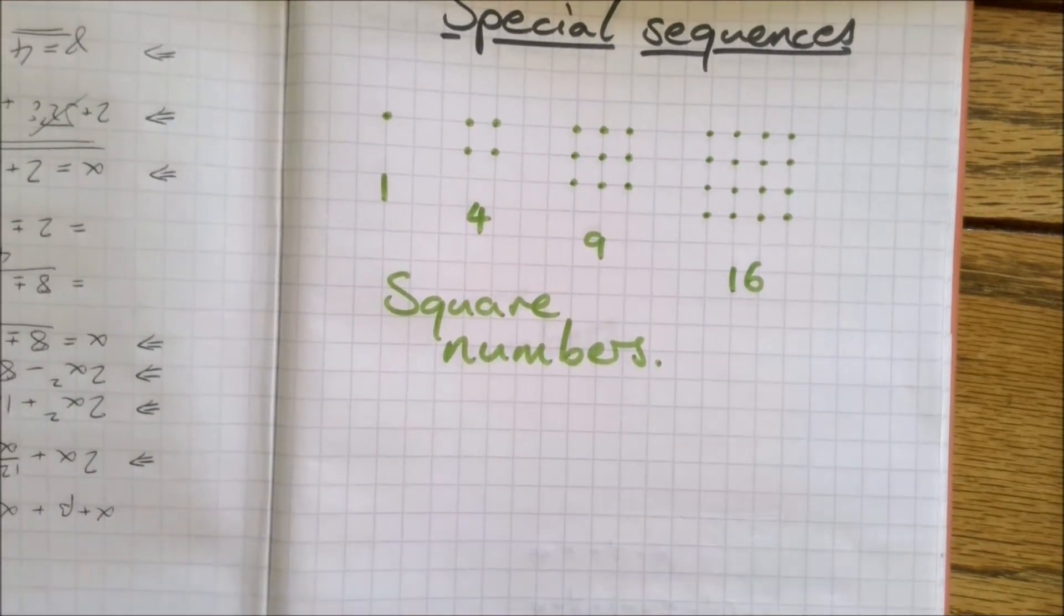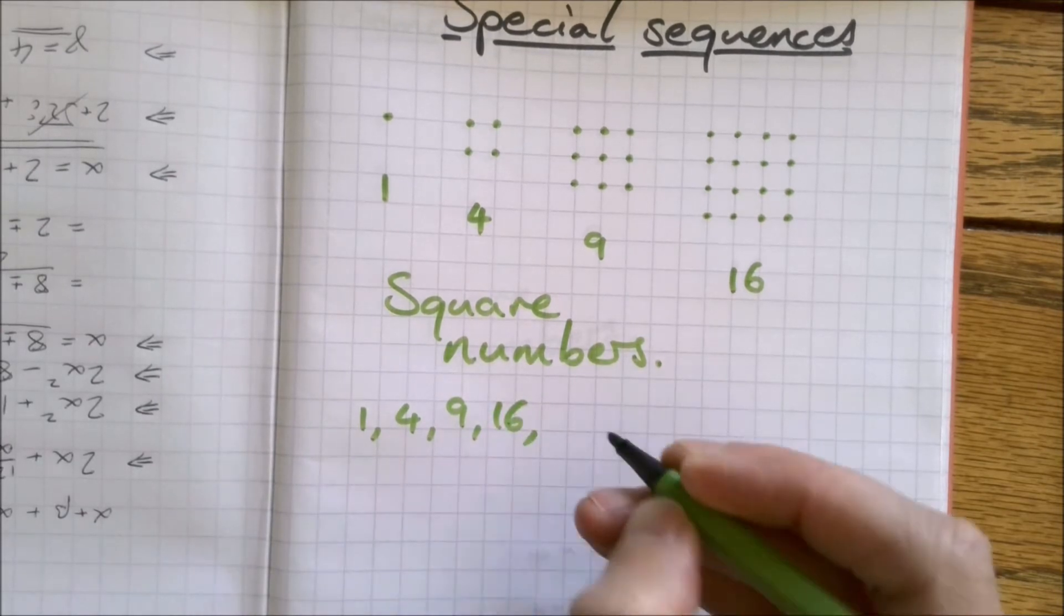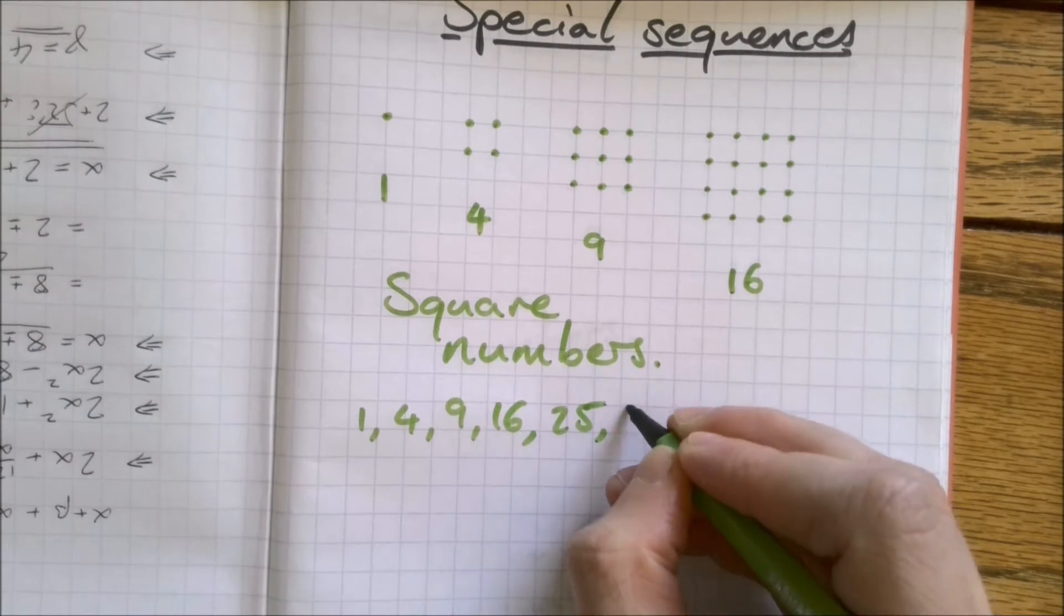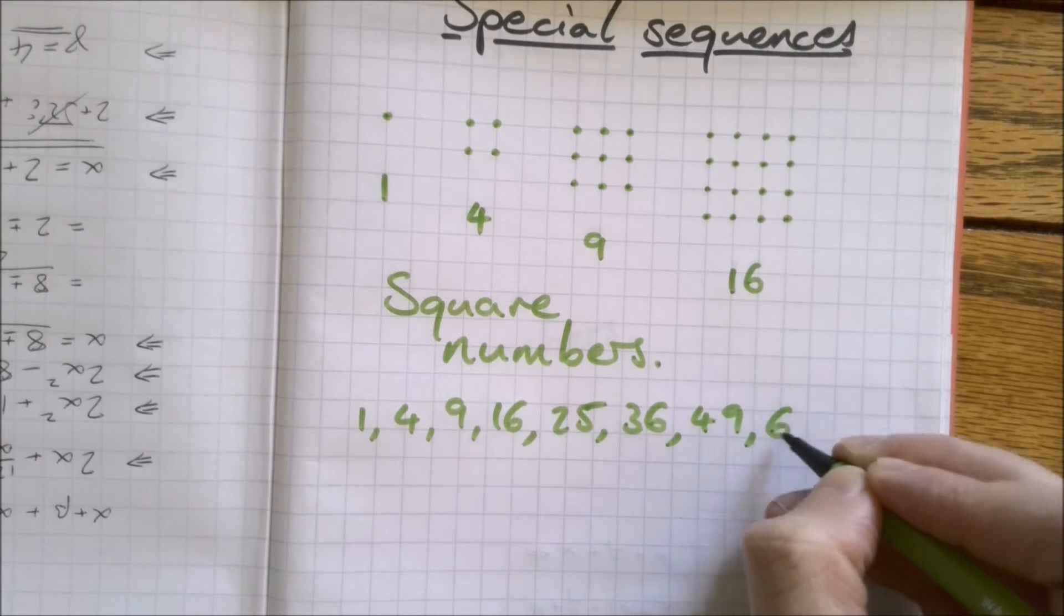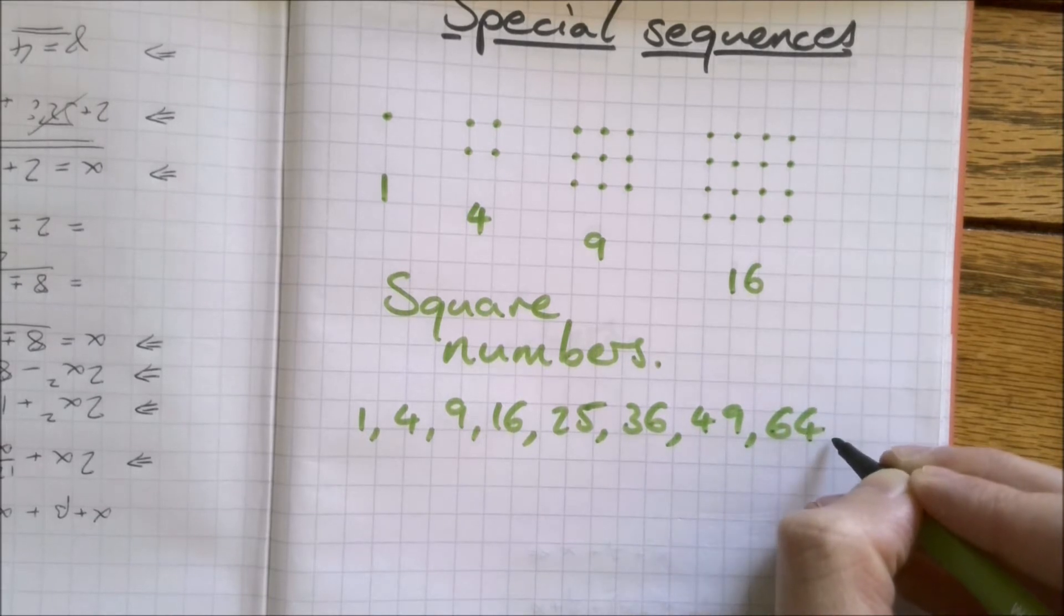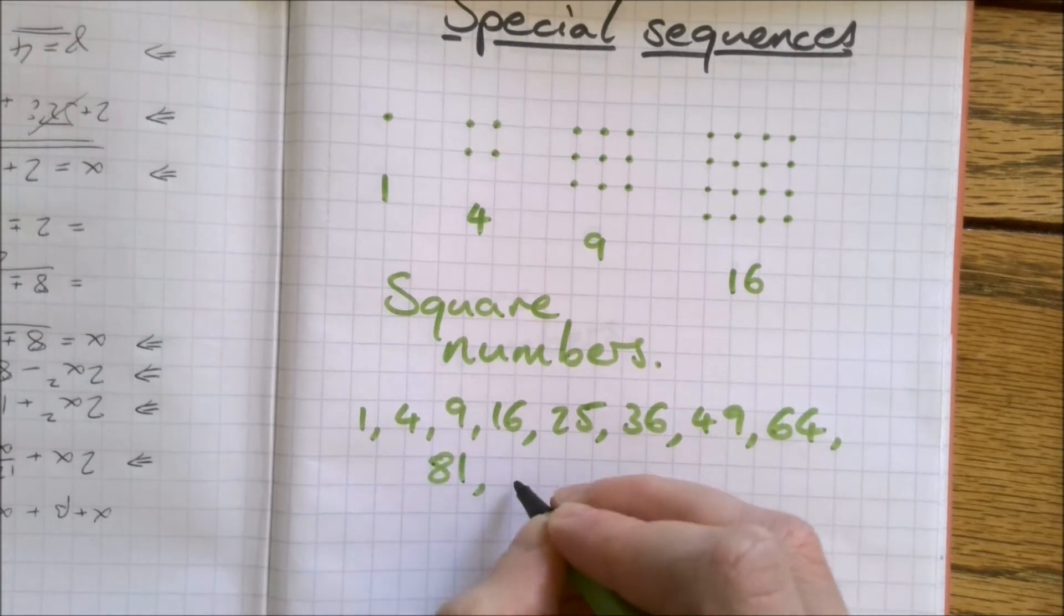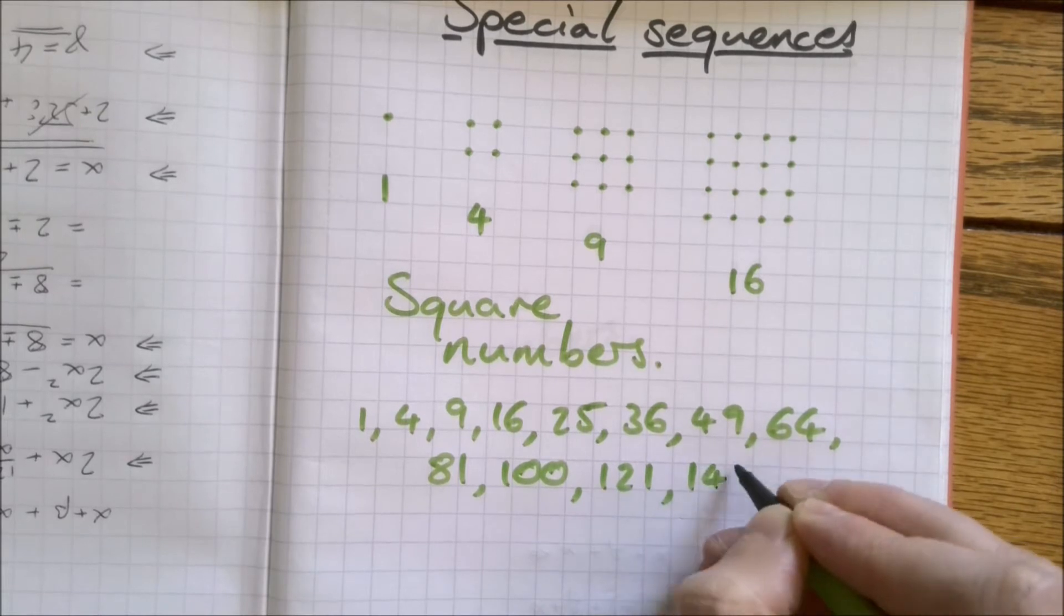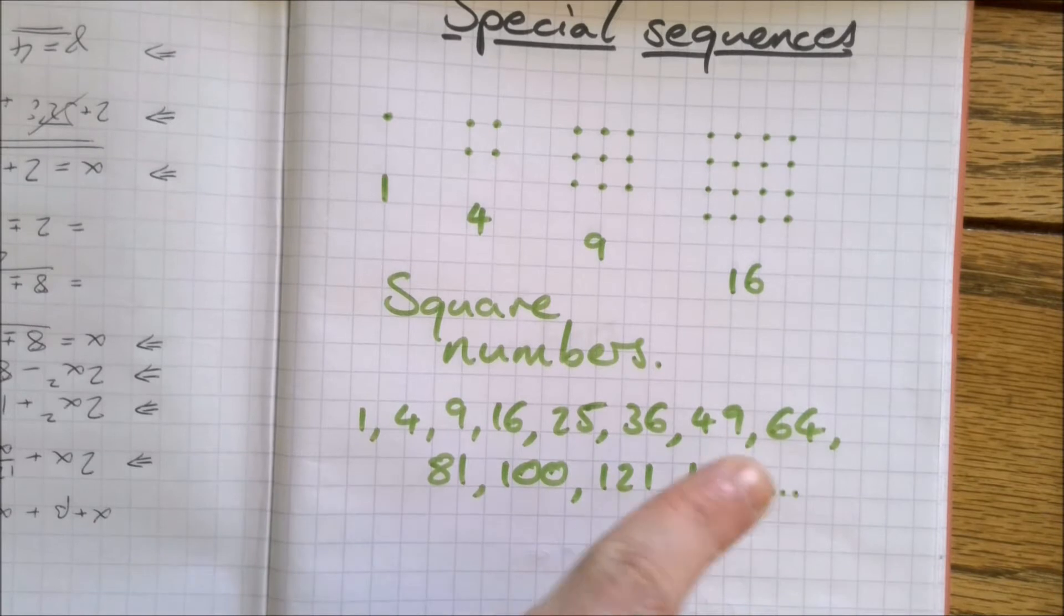I'm going to note down some more very quickly. We've got 1, 4, 9, 16. You should have got 5 by 5 is 25, 6 by 6 is 36, 7 by 7 is 49, 64. Let's go up to 12 times 12. 9 times 9 is 81, and 100, 11 times 11 is 121, and 12 times 12 is 144. Now that can carry on loads bigger but we're just going to stop there.